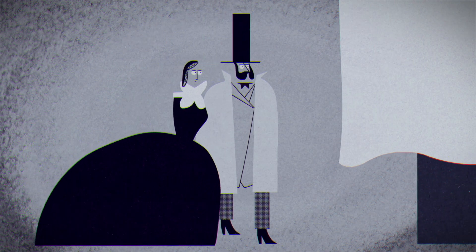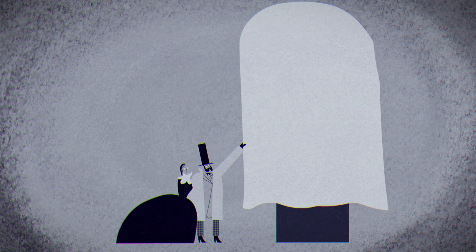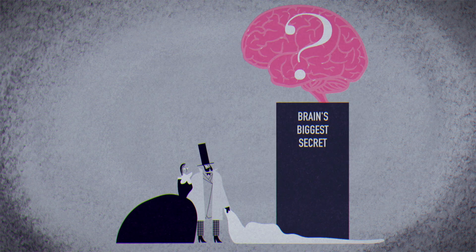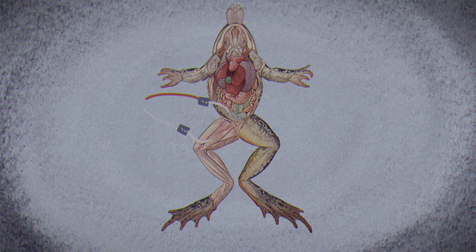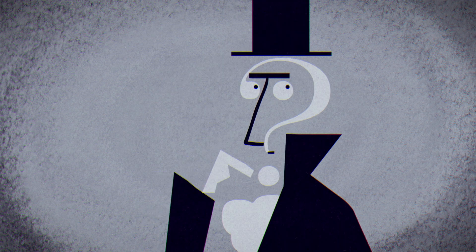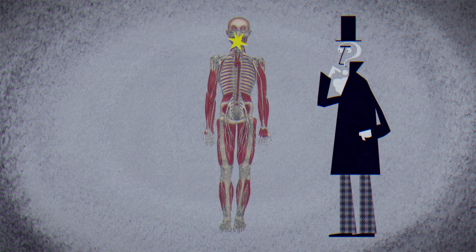In the late 1860s, scientists believed they were on the verge of uncovering the brain's biggest secret. They already knew the brain controlled the body through electrical impulses. The question was, how did these signals travel through the body without changing or degrading?